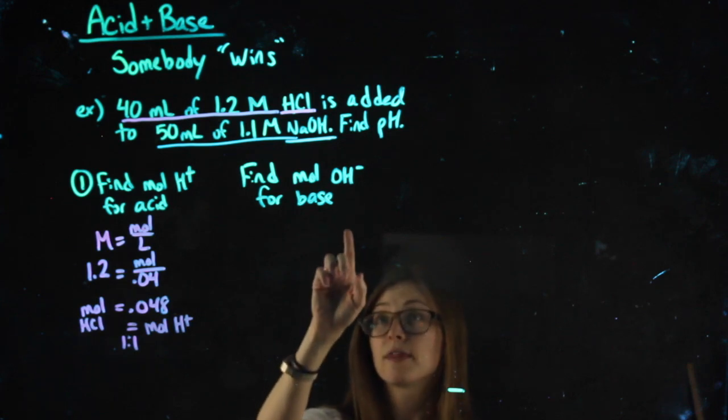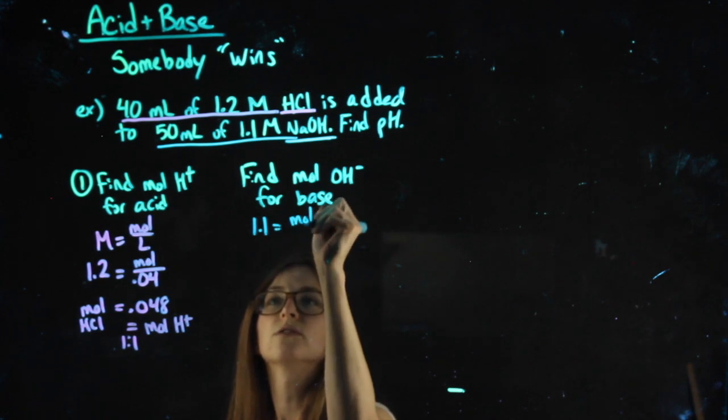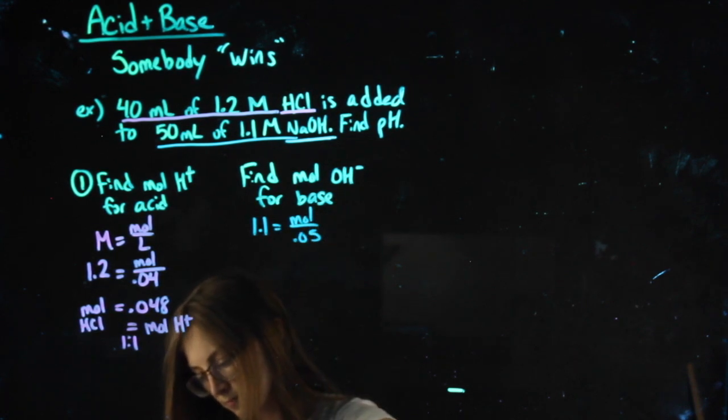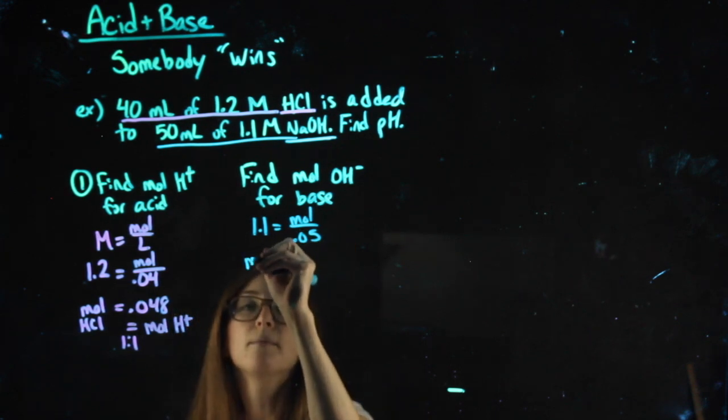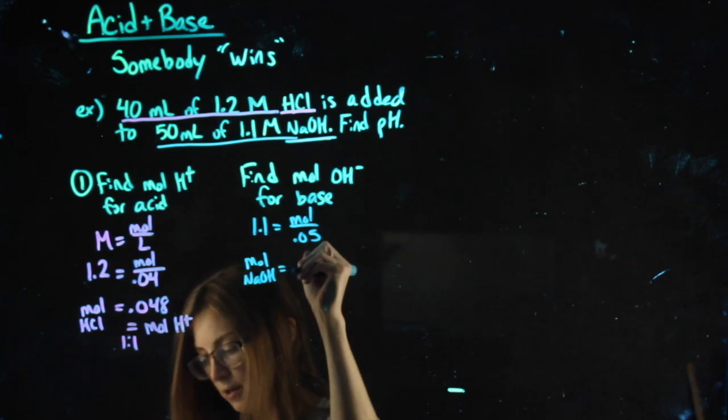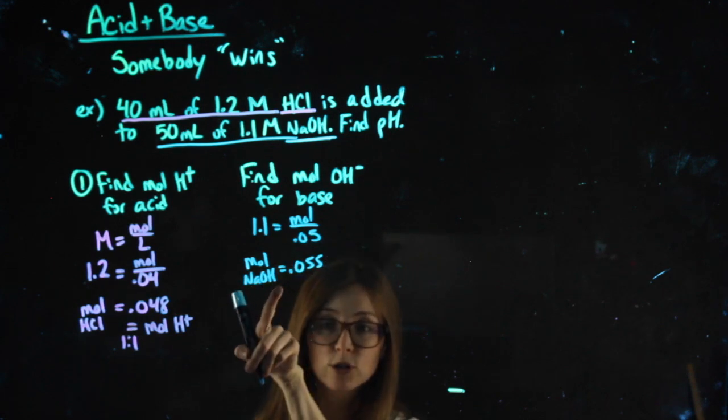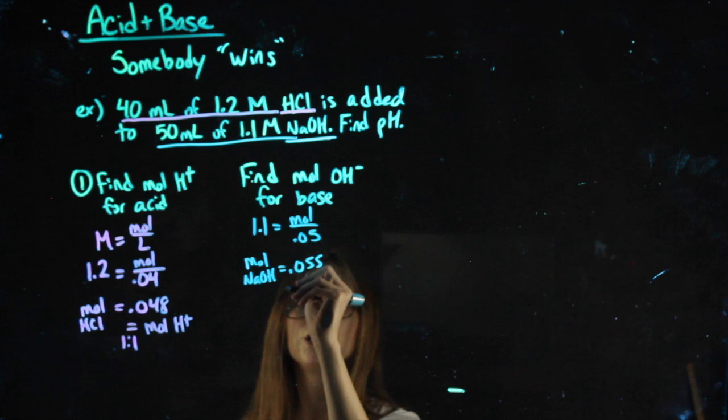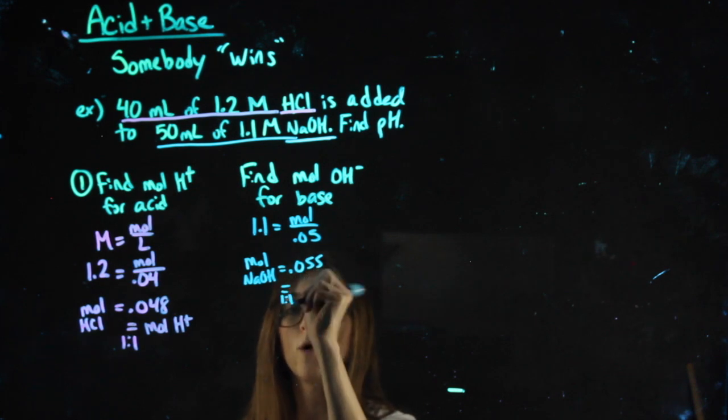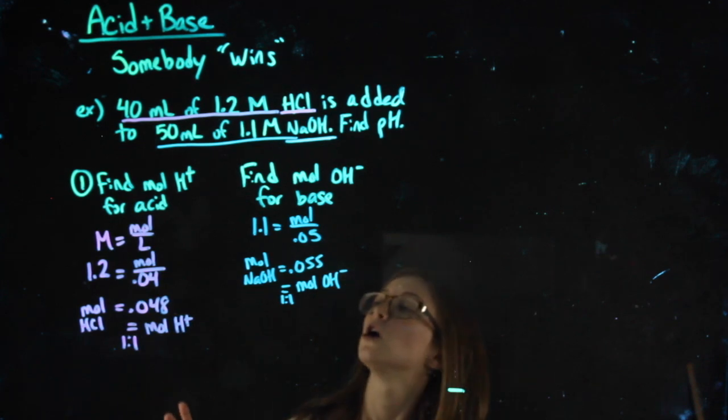For the base, same idea. Molarity equals moles over liters. When I multiply 1.1 times 0.05, I get my moles of the base to be 0.055. NaOH, there's no subscript of 2, so I don't have to worry about a two-to-one ratio. This must be one-to-one, so this is also my moles of OH-. First step: finding the moles of H, finding the moles of OH.